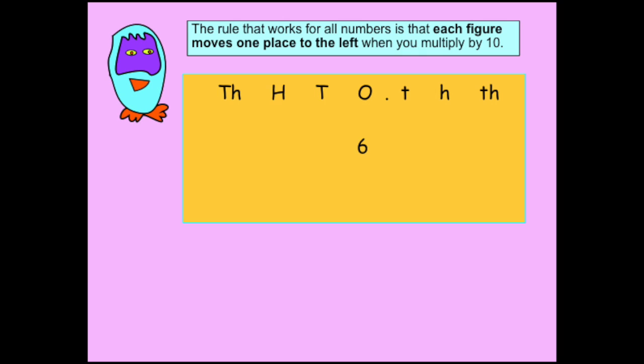In this example, you can see we've got the number 6. When you multiply by 10, you move the 6 one place to the left and you get 60.